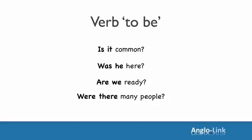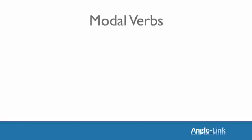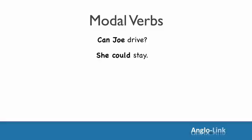Now let's look at how we formulate questions with modal verbs. First example: 'Joe can drive.' Like the verb to be, all you need to do is move the verb before the subject. Can Joe drive? 'She could stay.' Put 'could' before 'she.' Could she stay?